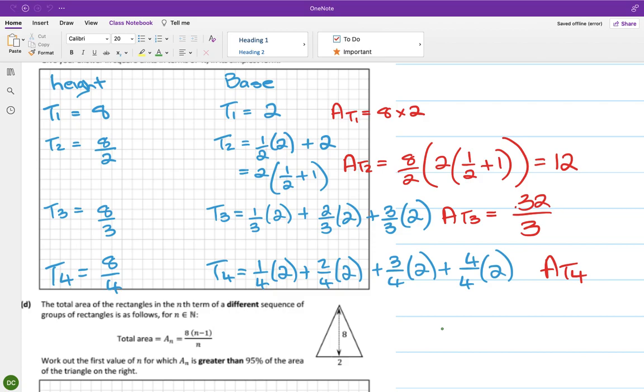We get the area of T4 by multiplying the base by the height. So 8 over 4 is just 2. So 2 by that plus 2 by the second one plus 2 by the third one, plus 2 by 2, 4s are 8 over 4. That's giving me 10.